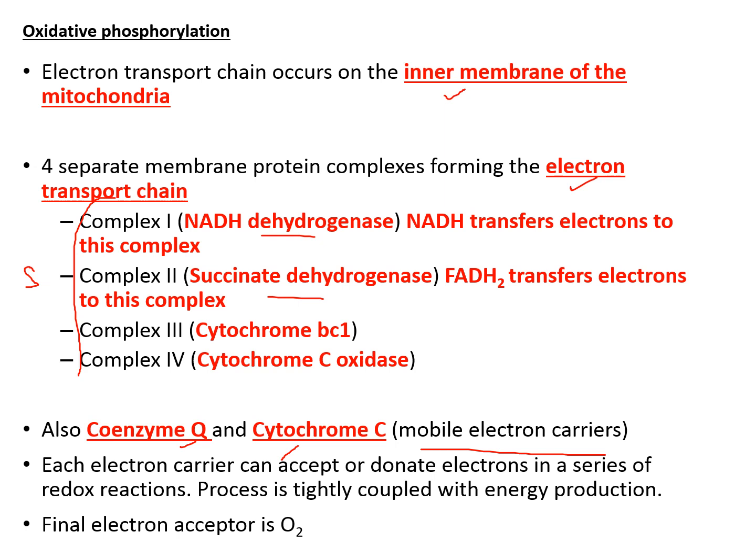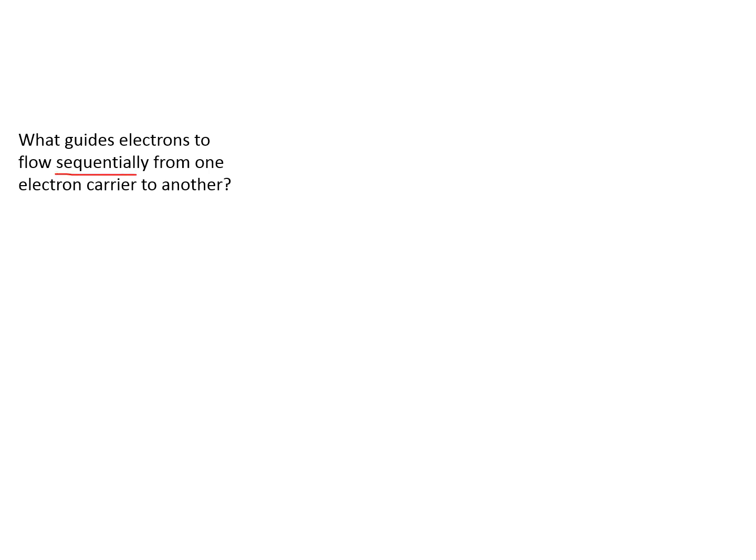We need oxygen in the electron transport chain because oxygen is the final electron acceptor. Therefore, oxidative phosphorylation is an aerobic process — it requires the presence of oxygen. Now the question is: how do we make sure that electrons flow sequentially from one carrier to another?